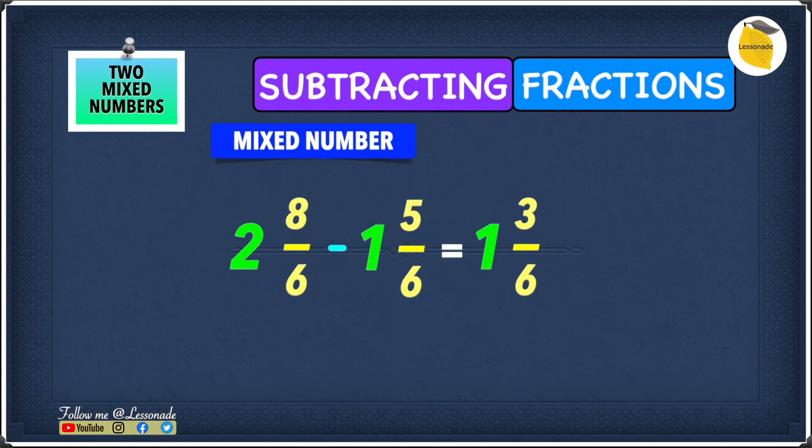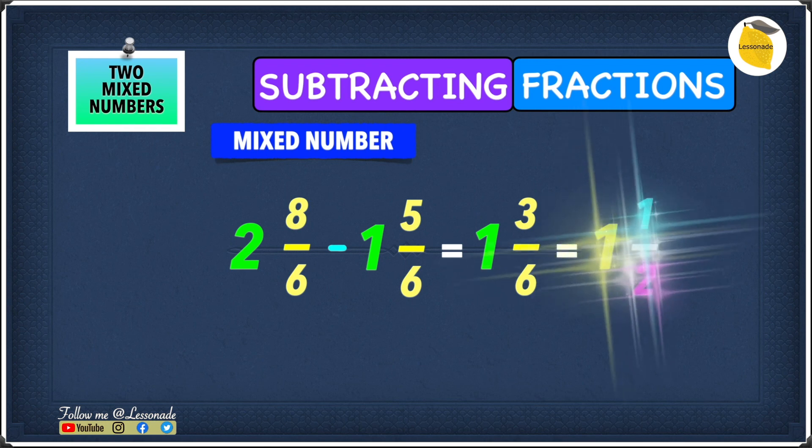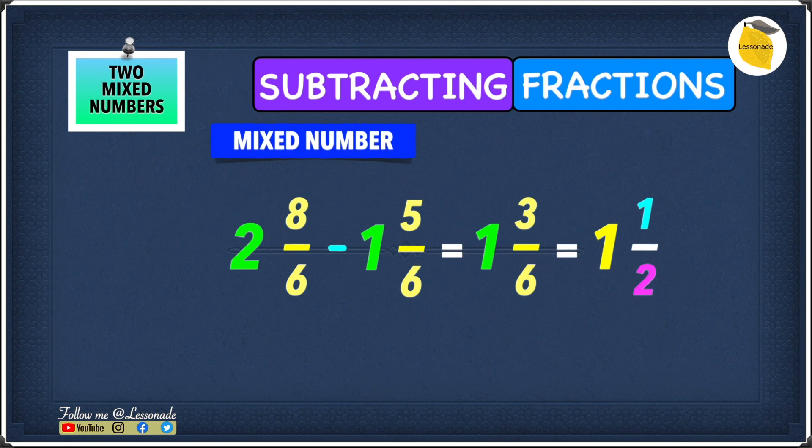But if you notice with 3/6, so 1 3/6, you can see that it can be further simplified. Because 3/6 still has the highest common factor. 3 and 6, they both have a highest common factor. So 1 3/6 simplified will be 1 1/2. This means our answer to this question is 1 1/2.